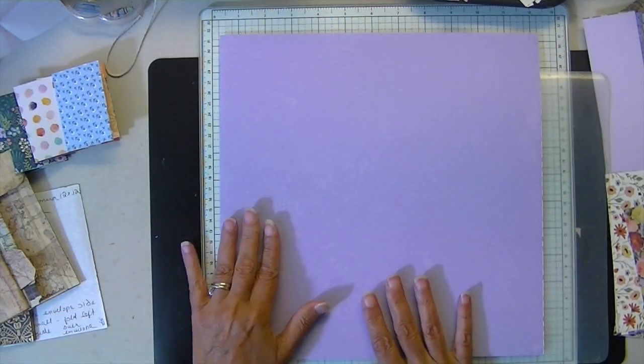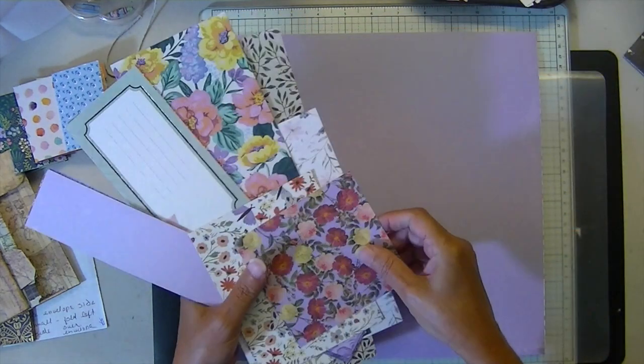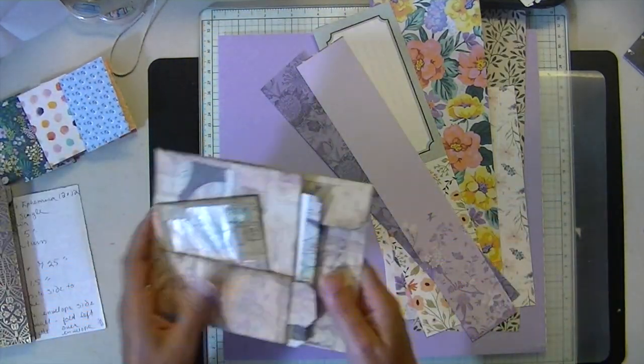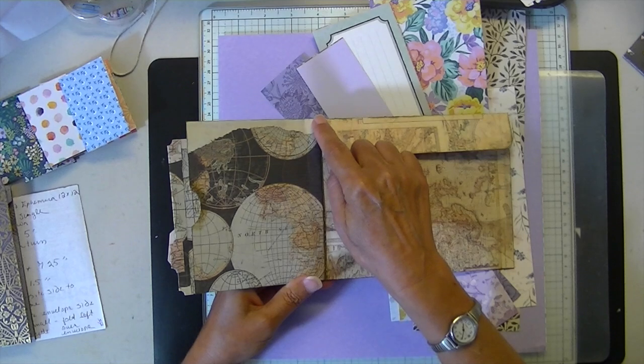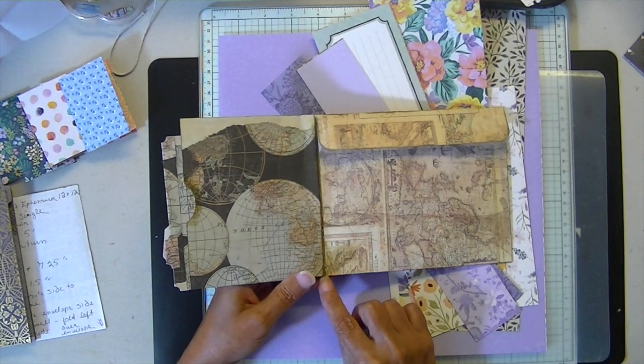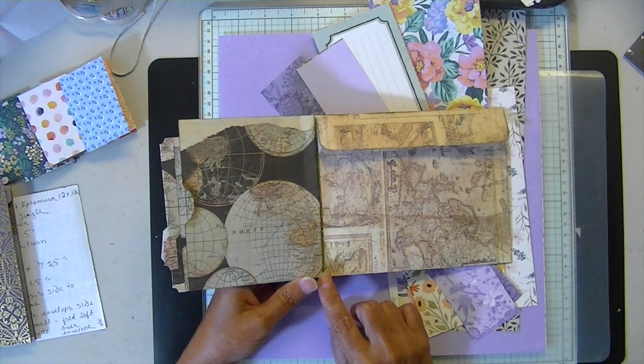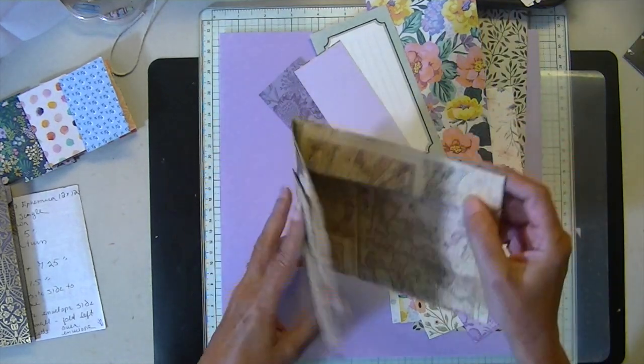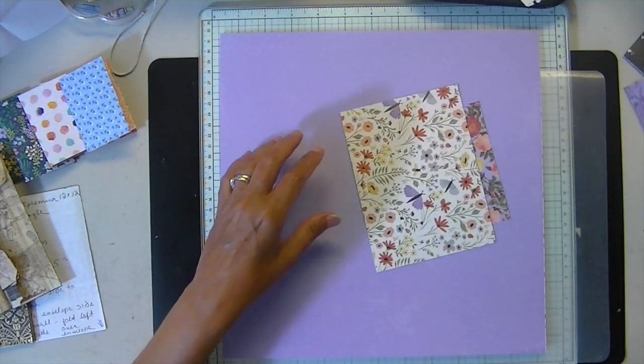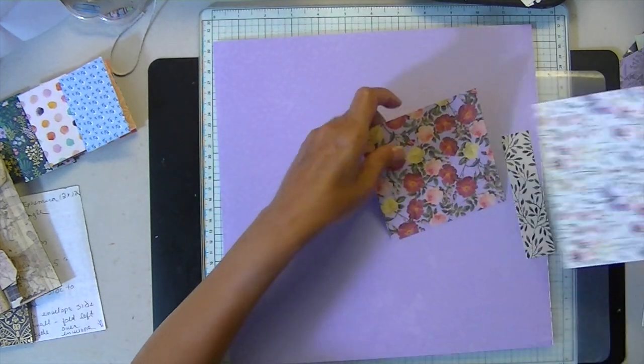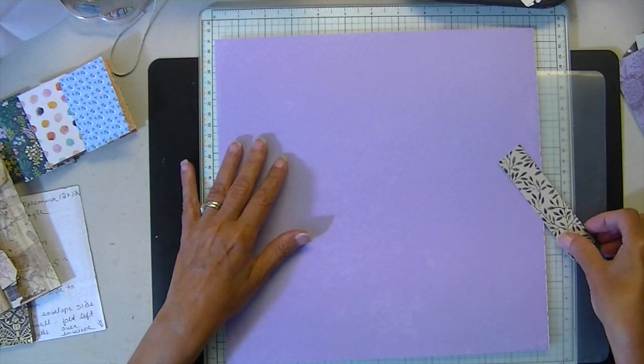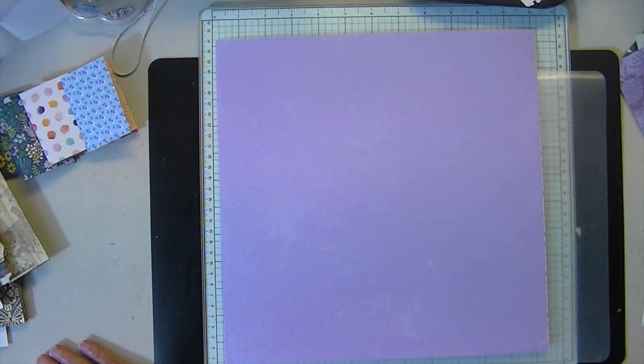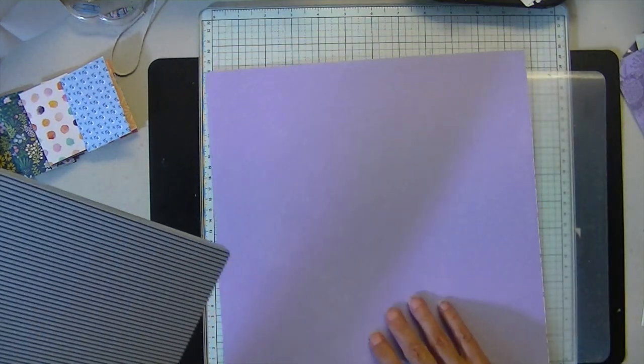So you will need a 12x12. And then you will need some scraps big enough to cover this space. And I'm going to measure it and mark it with a pencil because the measurements aren't exact. So I find it's probably going to be easier just to mark it with a pencil and then cut it. So that's what you'll need. A scoreboard, some glue, and some scissors.